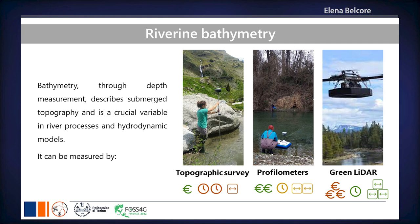Bathymetry can be measured with several methods. The traditional ones include topographic surveys with total station and reflectors, but also dual frequency receivers. We can also use profilometers that are based on Doppler measurements. They are a bit faster than traditional methods, working in cross-sections along rivers, though a little more expensive.